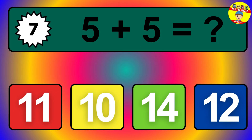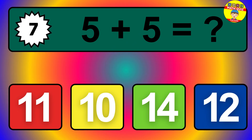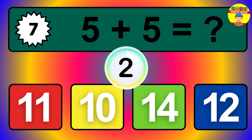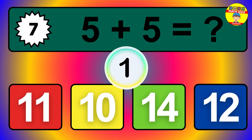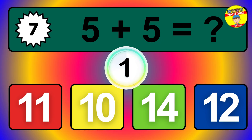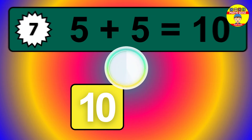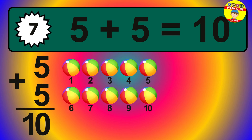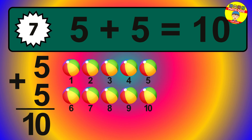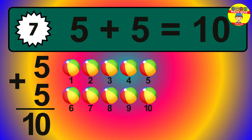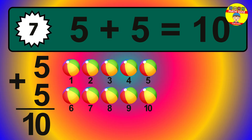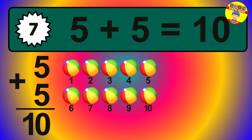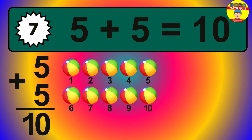Question 7. 5 plus 5 equals what? So the answer is 5 plus 5 is 10. Let's count it: 1, 2, 3, 4, 5, 6, 7, 8, 9, 10.